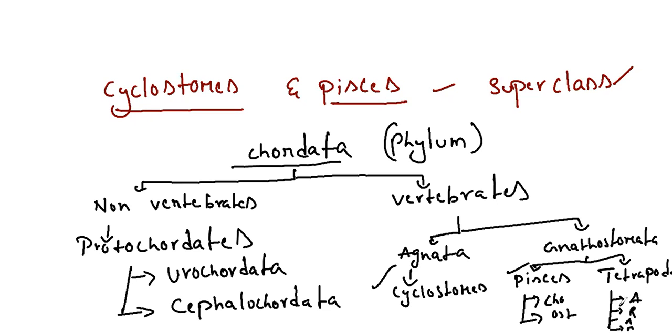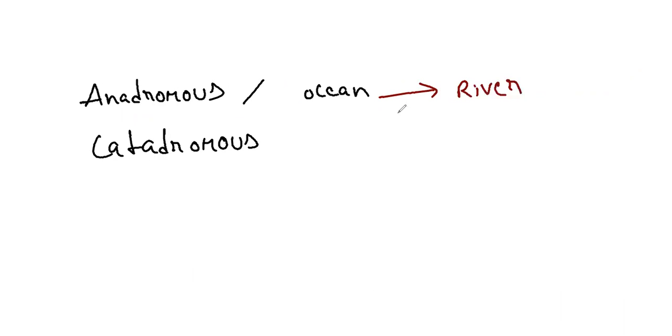Now we are going to differentiate between cyclostomes and fishes. Very interestingly, cyclostomes will be having anadromous and catadromous migration. What is anadromous? Moving from ocean to river for spawning purpose. And what is catadromous? Moving from river to ocean back. Actually the adults will go to the river for spawning, after laying eggs they will die. Afterwards the larva will again come back to ocean. This will be seen in cyclostomes.